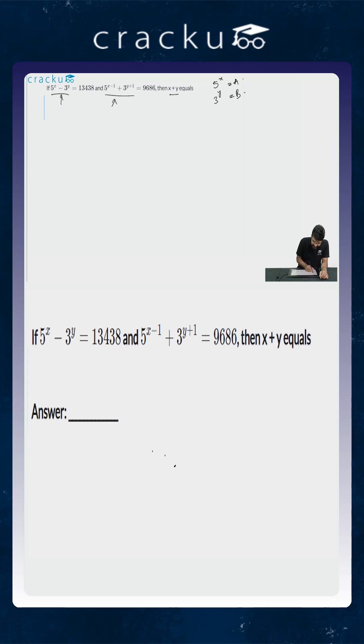So the first equation transforms to a minus b is equal to 13438. Now as 5 to the power x is equal to a, 5 to the power x minus 1, which is equal to 5 to the power x by 5, will equal a by 5.